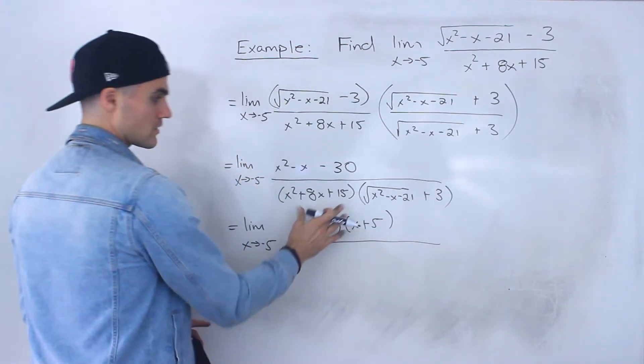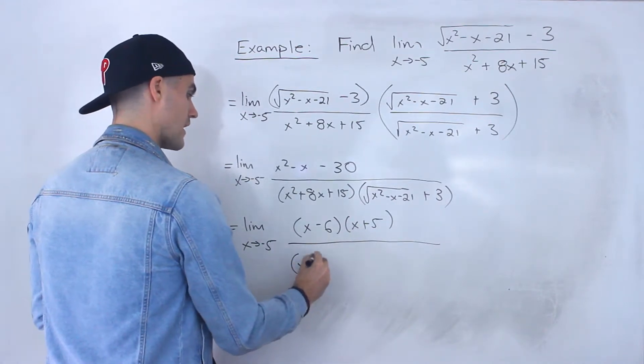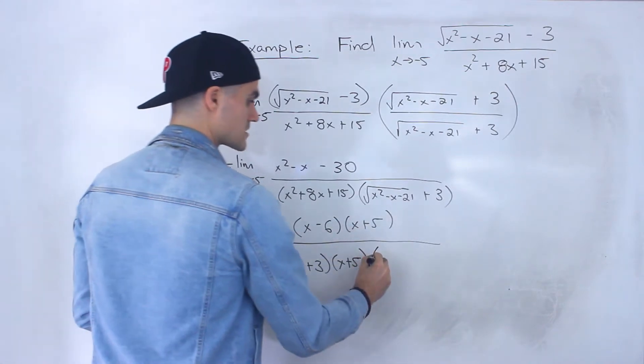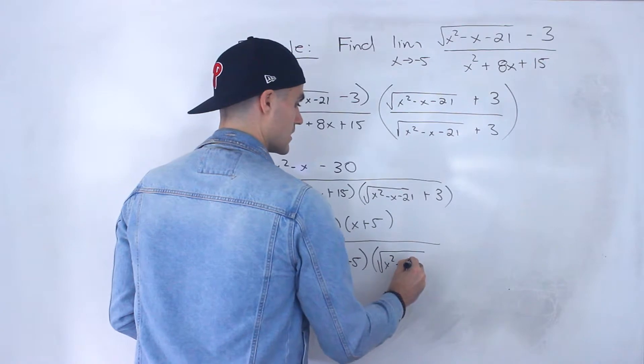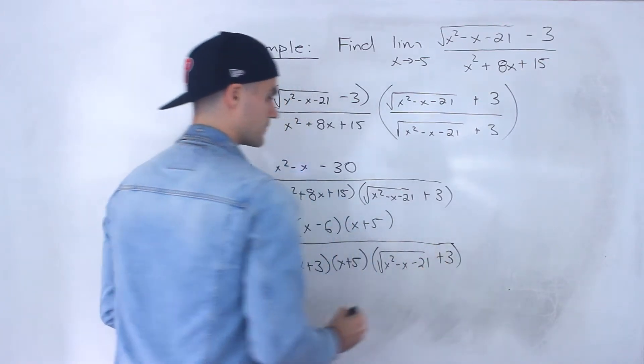And we can also factor this expression, so this would be x plus 3 times x plus 5. And then we'll still have this expression, square root of x squared minus x minus 21 plus 3 like that.